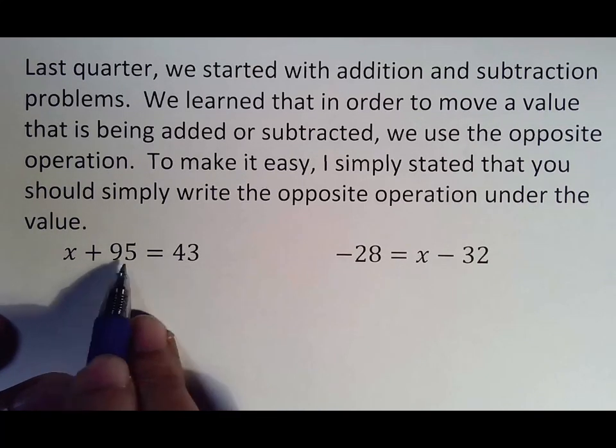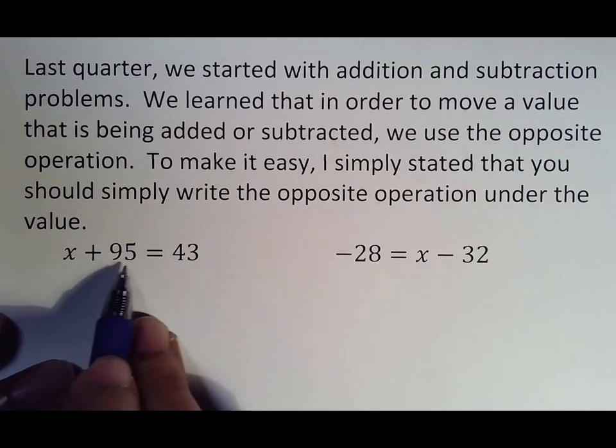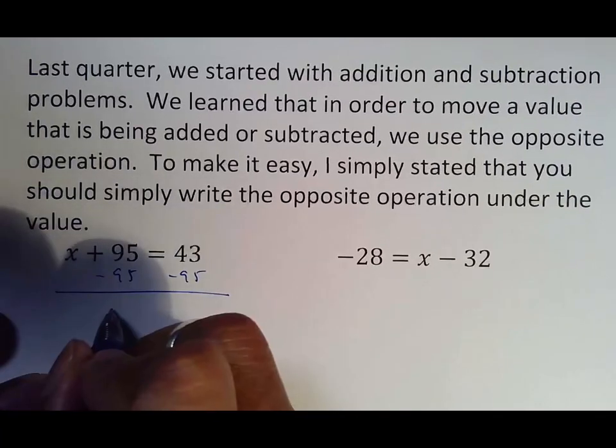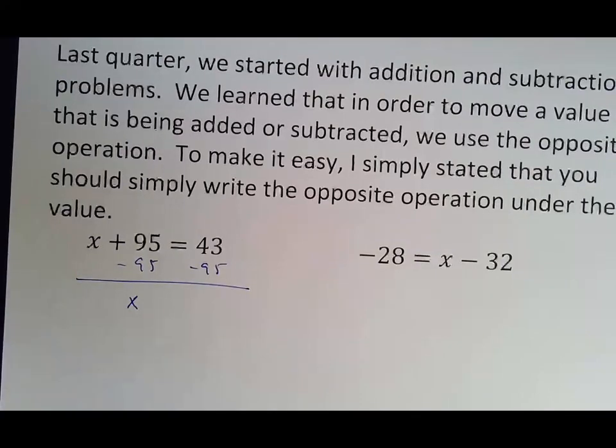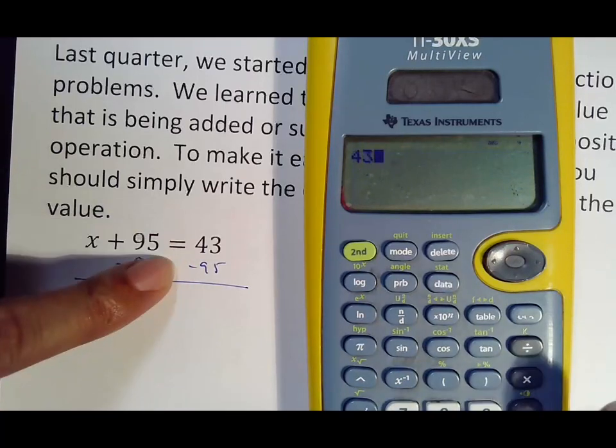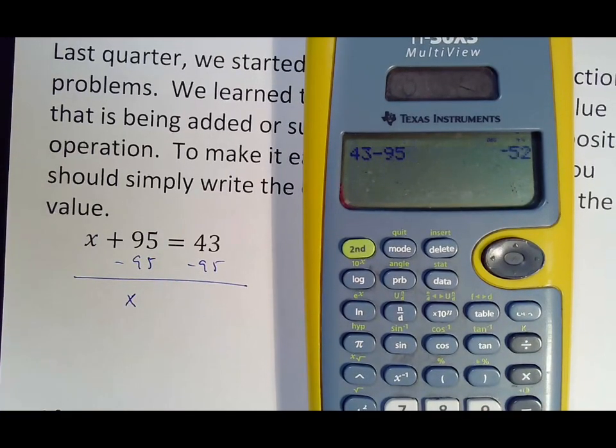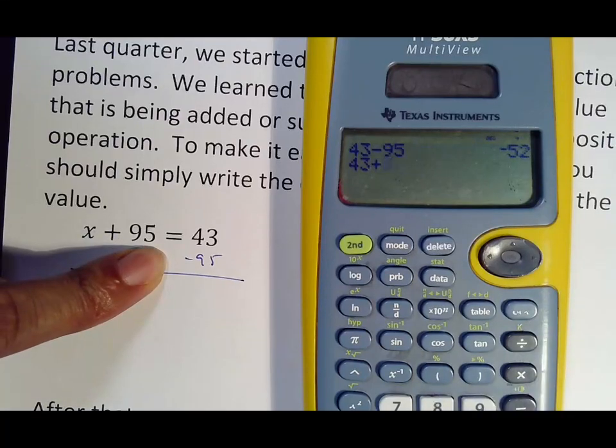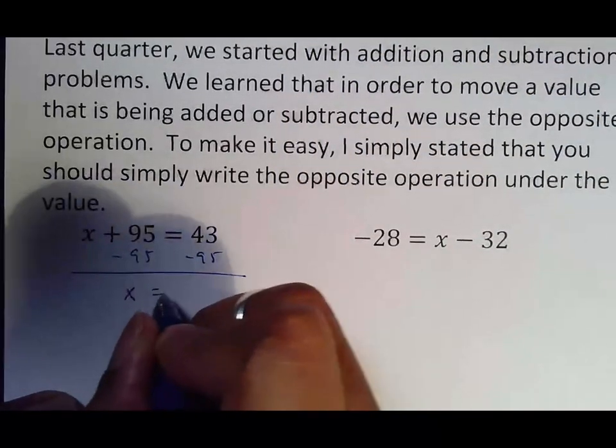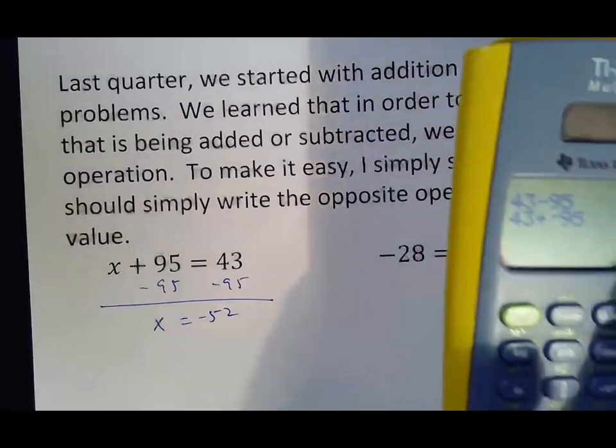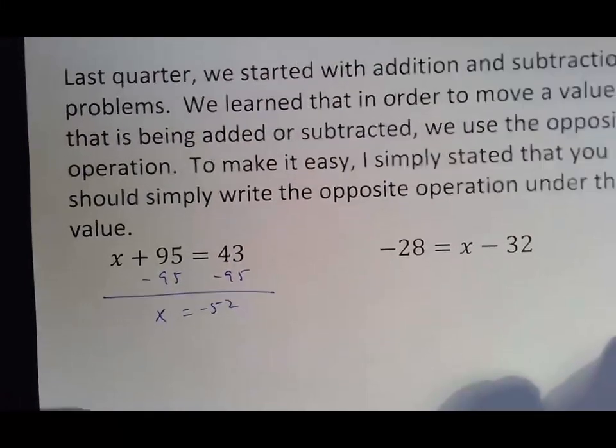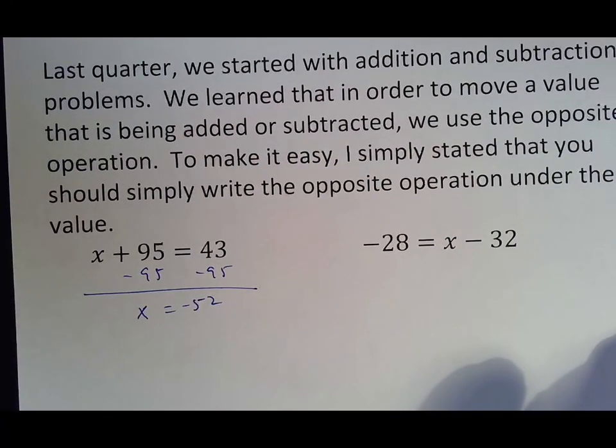So this is the one where it asks you what is x, and we would say 95. And if you want to move that 95, which is being added, we simply put in minus 95 here, minus 95 there. We brought down our X because that went away. And if you don't know what 43 and minus 95 is, you have a couple of options. You could put 43 minus 95, or you could put 43 plus because you're combining them, a negative 95. Either way, your answer is negative 52. It's going to be important for you to remember that your negative button's here and your minus button is there.